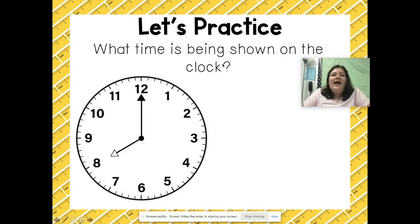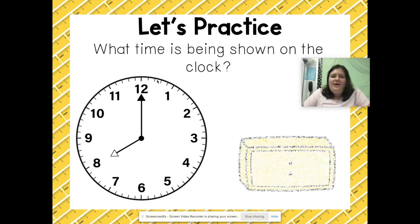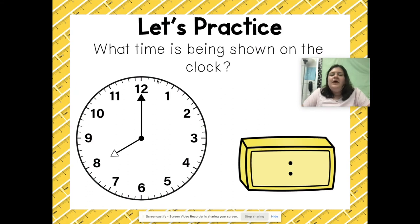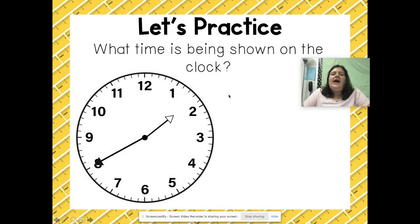Let's look at what time this next clock is showing. This one is pretty easy because the hour hand is pointed to the 8 and the minute hand is pointed to the 12, so I know it's the start of a new hour — 8 o'clock, or 8:00, is being shown.